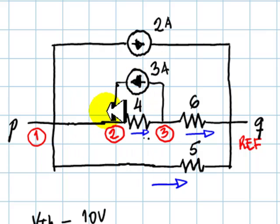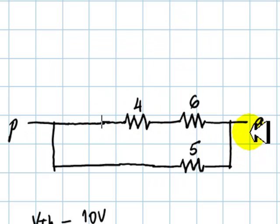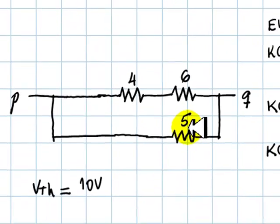We short the source, we short the source, we open the source, and we open the source as well. The combination of these resistors will be R Thevenin.